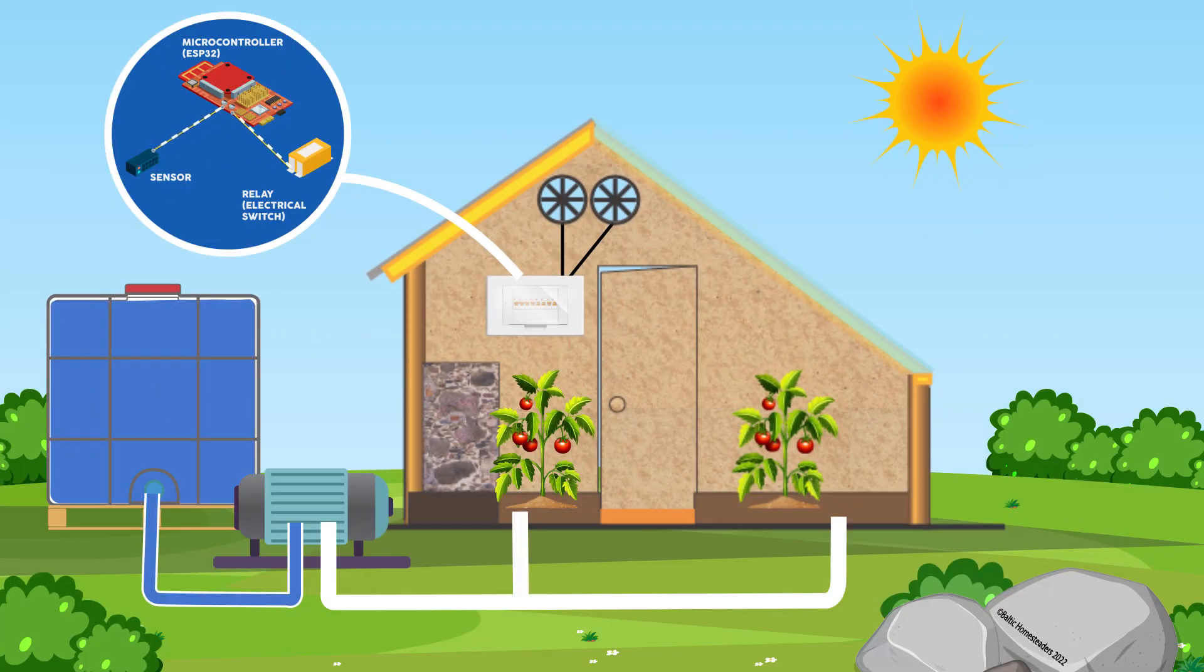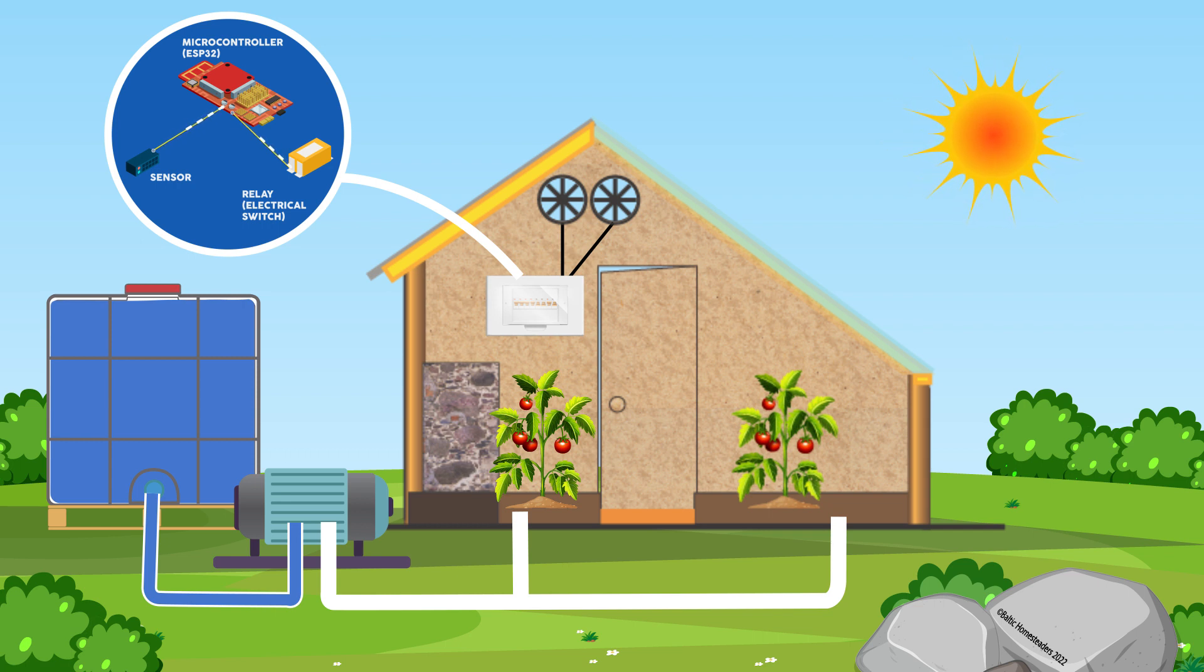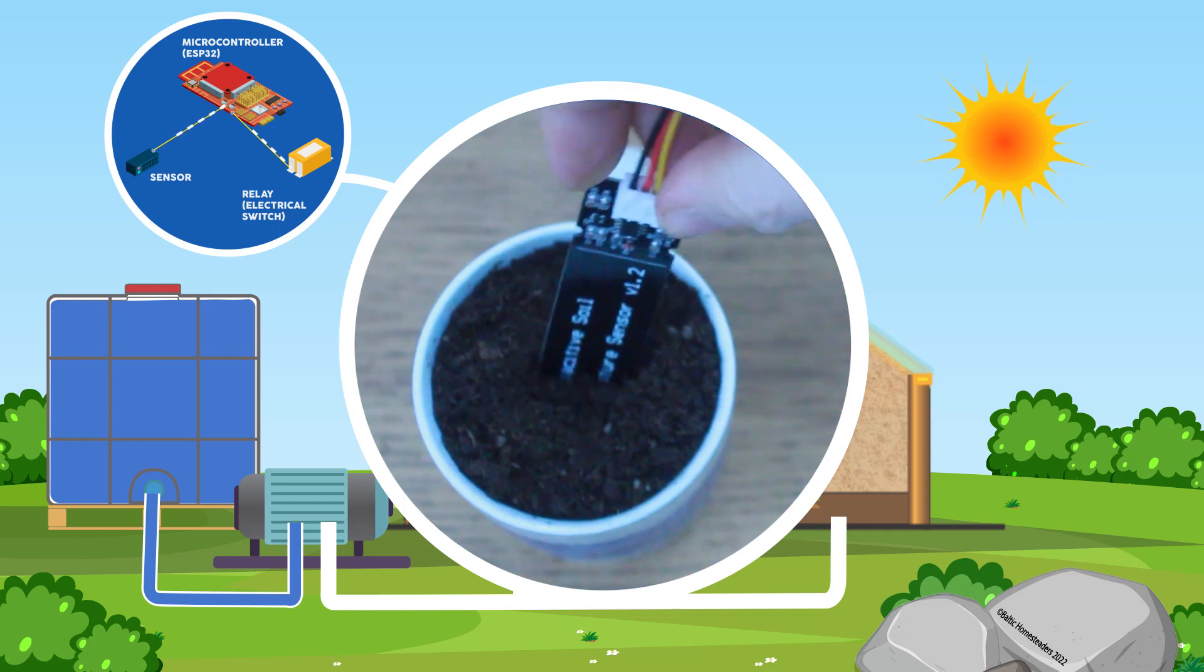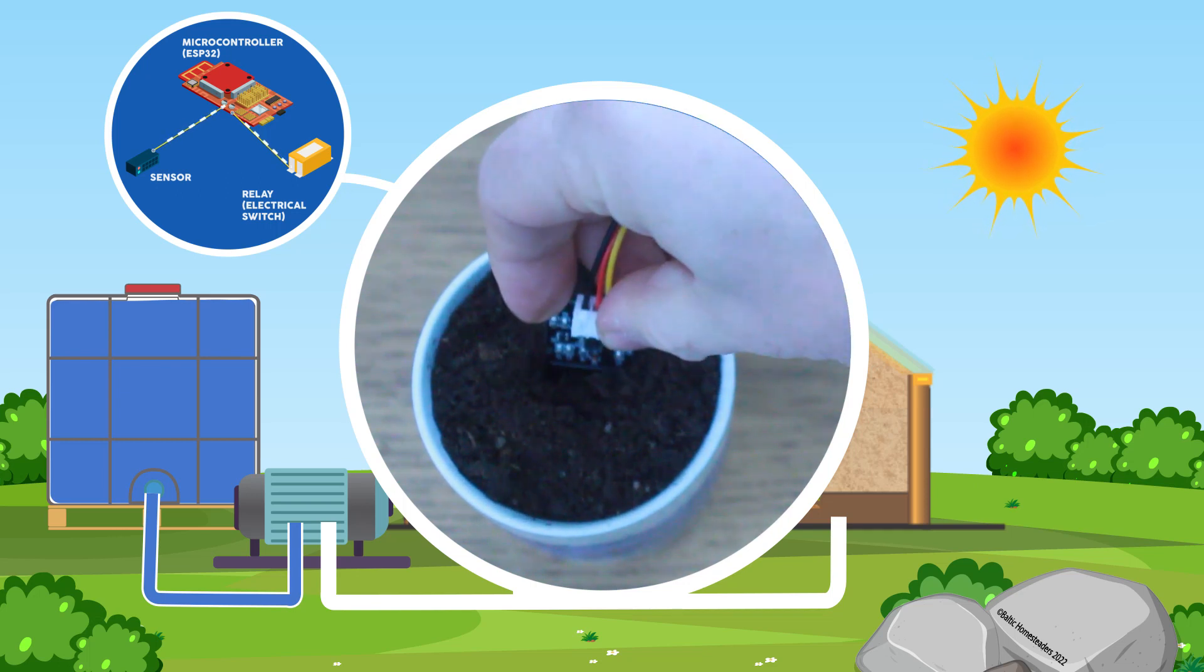So in addition to controlling the ventilation, we can also use sensors and the microcontroller to automate the watering of our greenhouse garden beds. By using a soil moisture sensor, which I demonstrated in a previous video to measure the moisture level in the soil, the microcontroller can determine when the plants need water.